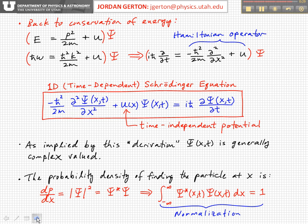All right. Now, as we went through this derivation, we showed that in general, the wave function psi is generally complex valued. So it's got real and imaginary parts. And importantly, the probability density of finding the particle at x, dp dx is given by the complex magnitude squared. It's psi squared.